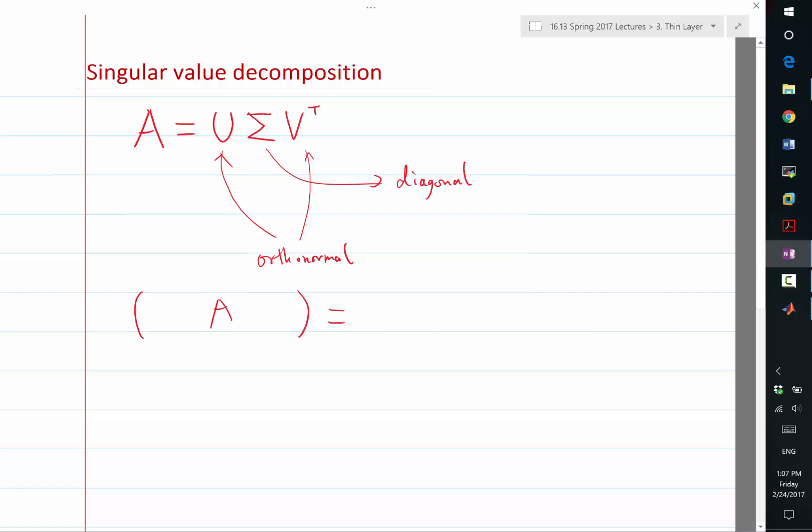What we get is an orthonormal matrix U, which has to be the same dimension of which dimension of A? By the way, an orthonormal matrix is always square, right? So U has to be the same as which dimension? Same as the rows, right? So U is a smaller matrix.